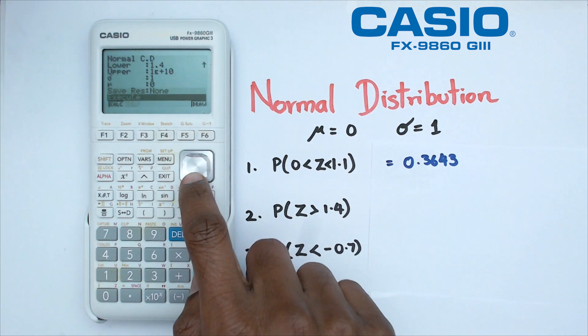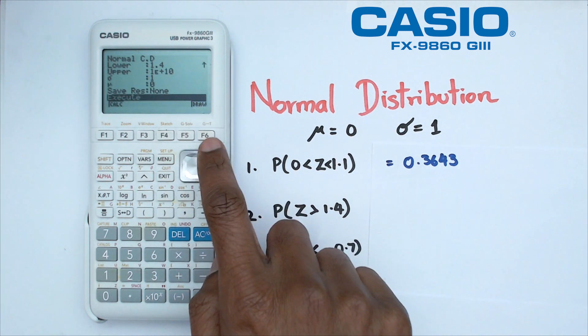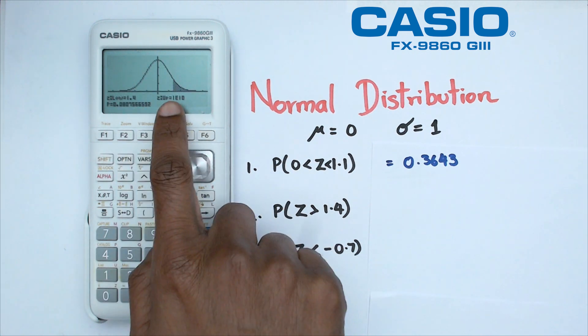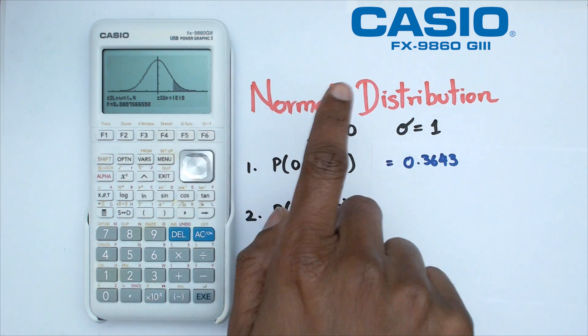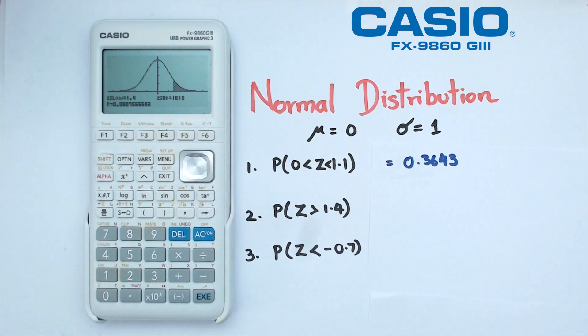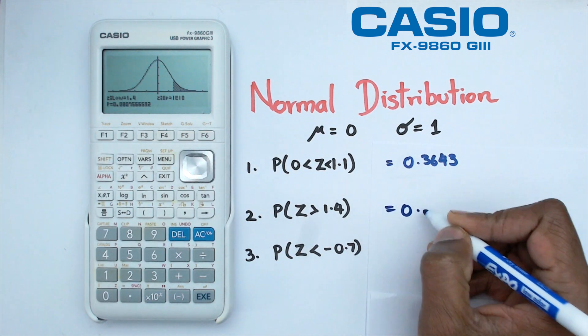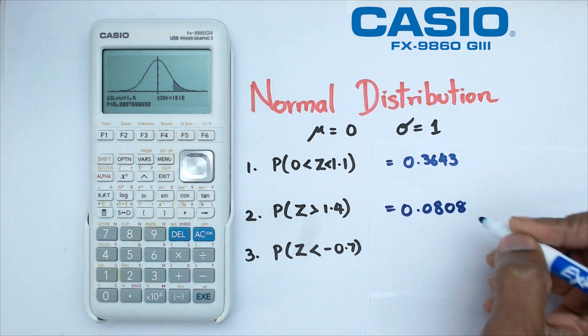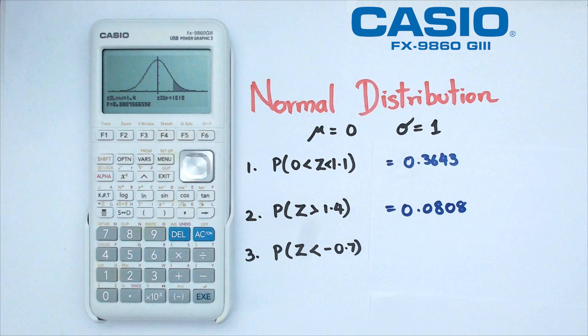So what I'm going to do is I'm going to go right down to the bottom and click on draw and as you can see the lower limit is 1.4 and the upper limit, well that's going to be a very large number and we're getting our probability which is equal to 0.0808. I'm just going to round it up to four decimal places. With normal distribution we kind of do four decimal places and of course in different countries they have different expectations.